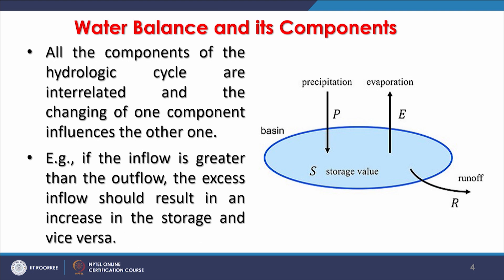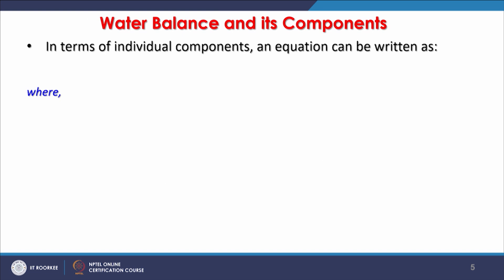For example, if inflow is greater than outflow, the excess inflow should result in an increase in storage, and vice versa. If there is a drought period with less rain, the budget will go into deficit.